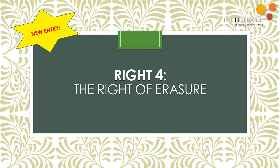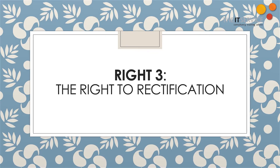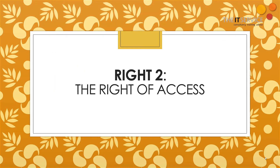Time for the top three! In at number three, we've got the alliterative allure of the right to rectification. So if your data is wrong, you can have it put right. And if your data is incomplete, you can add to it to make it complete. Vying for top spot but holding steady at number two, we're looking at the famous right of access. All those of you wanting to make a subject access request — known and loved as a SAR — this is the right for you. You can ask any organisation, what have you got on me? And if you're an organisation, you'll need to respond within just a month, not the 40 days you've had before.